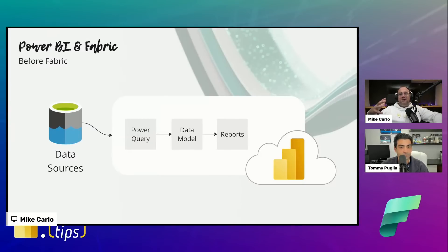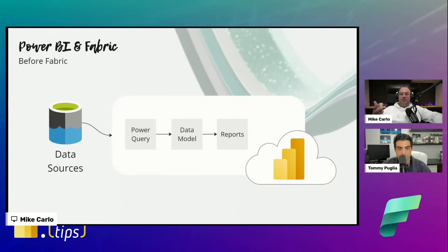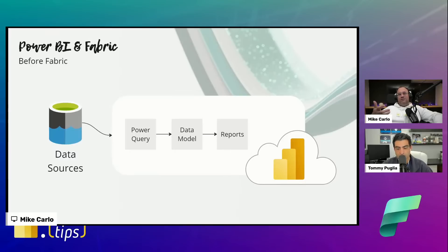Moving on to the next slide — how do we think about this new ecosystem? We think about all of our data sources, and Power BI gives you a rich supply of them. The Power BI ecosystem has really had this three-step process: Power Query, data modeling, and serving reports. You bring data in, you transform it, you build relationships and tables, and then you build out your reports.